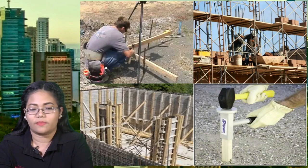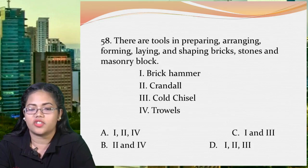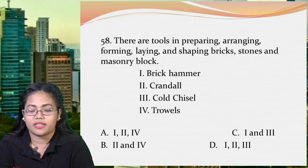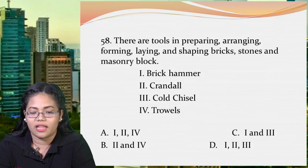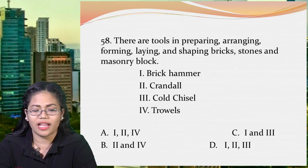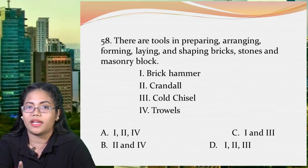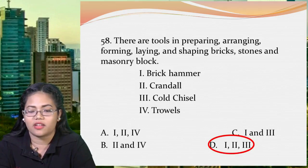Next question: these are tools in preparing, arranging, forming, laying, and shaping bricks, stones, and masonry blocks. The given options are brick hammer, crandle, cold chisel, and trowels. The brick hammer and crandle are both hammers for shaping masonry stone. The cold chisel is for shaping or cutting edges. The trowels are for finishing touch. Since the question asks about preparing, arranging, forming, laying, and shaping — and finishing is not mentioned — the answer is letter D: trowels, because trowels are for finishing touch, not those listed tasks.